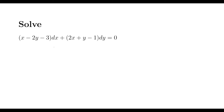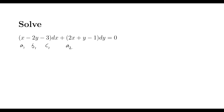The first thing we want to check with a problem like this is the ratio of the coefficients of the x's and the y's. If the equation is written with coefficients a1, b1, c1 and a2, b2, c2, we check whether a1/a2 equals b1/b2. Here a1=1, a2=2, b1=-2, and b2=1, so these ratios are not equal.